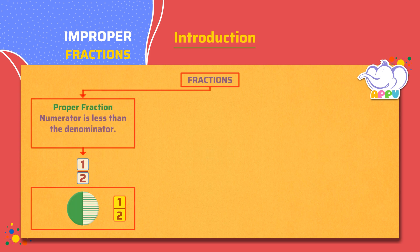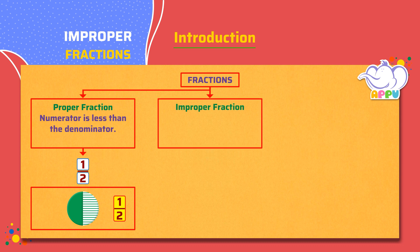We learnt about proper fractions. Let's now see what improper fractions are. A fraction is an improper fraction if the numerator is equal to or greater than the denominator.